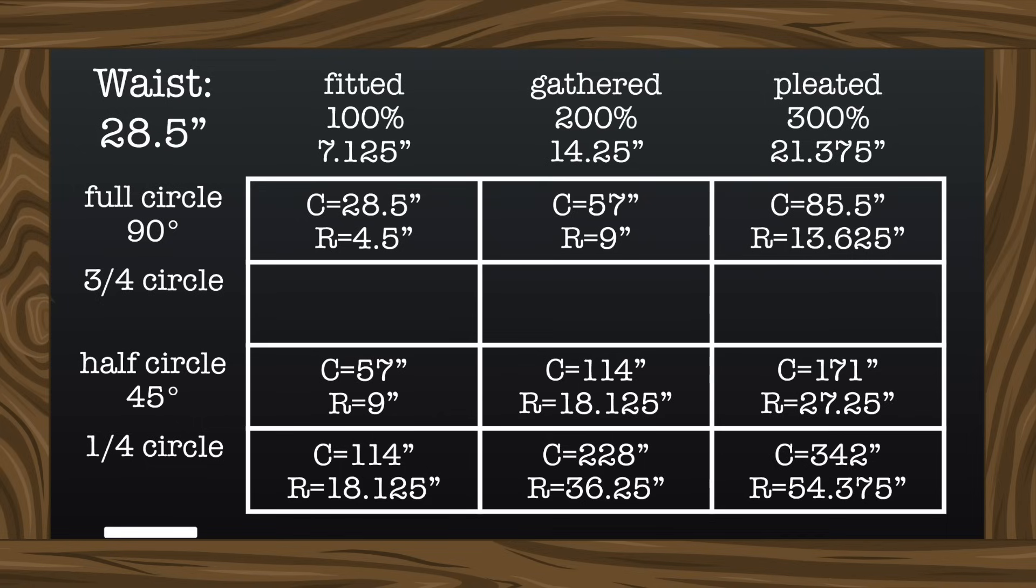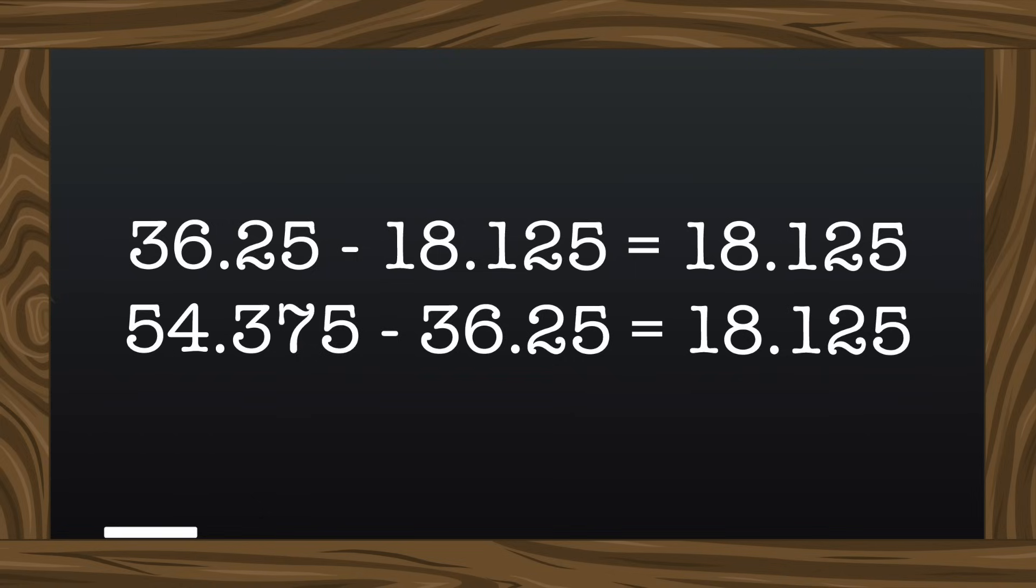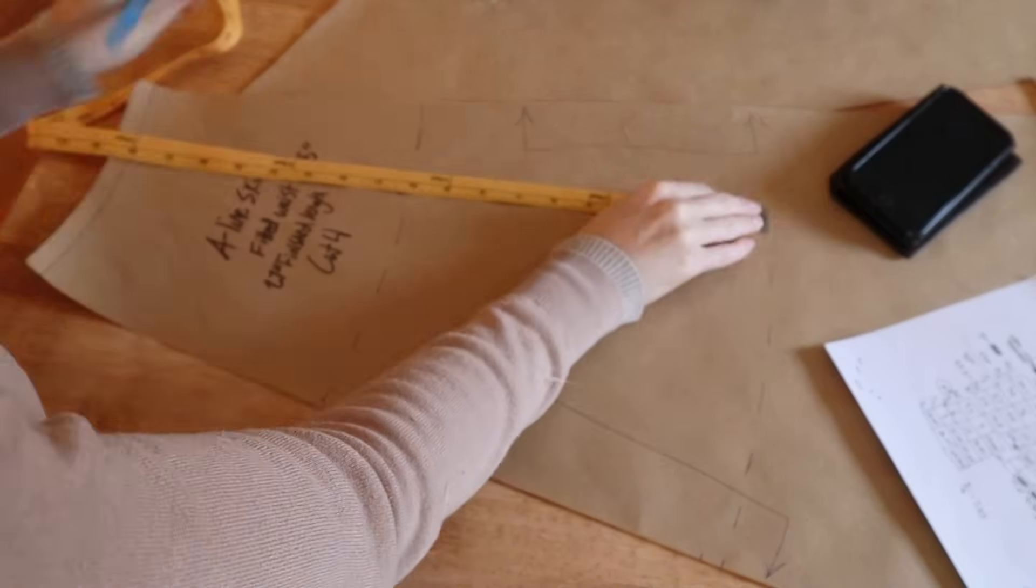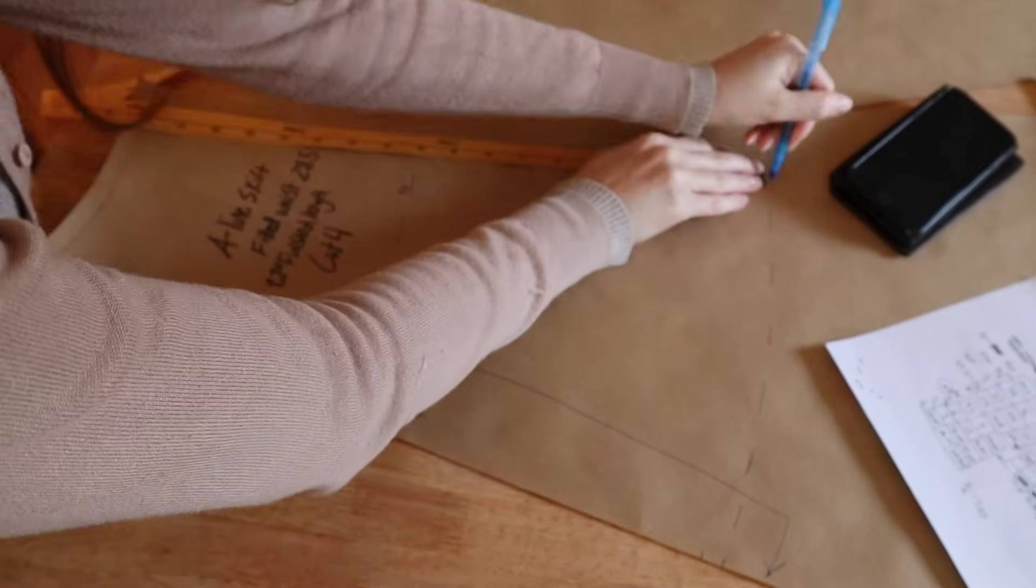I did find that here the radii were so long that it would have been extremely impractical to try and pattern them the same as I did the others. So I took a shortcut by subtracting the radii from each other and measuring out each waistline on the same piece. So start at your first waist measurement and go down by 18.125 inches.